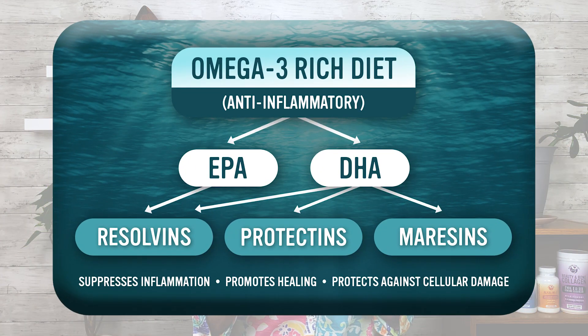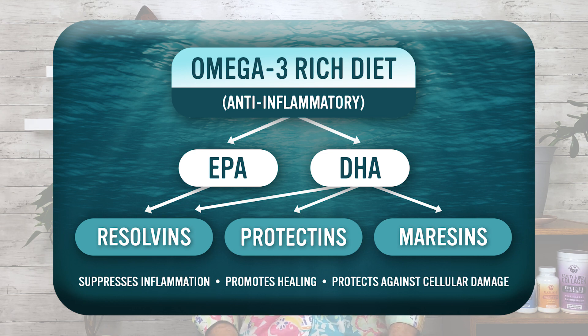The form of omega-3 fats matters. We need to use EPA and DHA directly because the body does not convert very much of the plant omega-3 fats into EPA and DHA. The effective agents are EPA and DHA, and you want about 3,000 milligrams of EPA and DHA together.